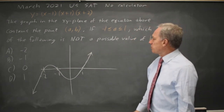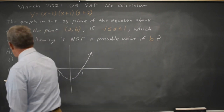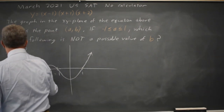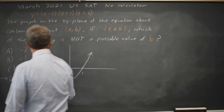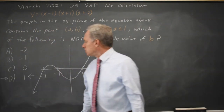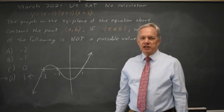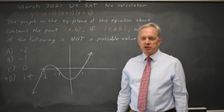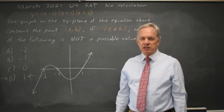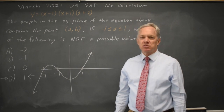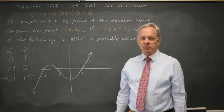Which is choice D. The y-value for an x between negative 1 and positive 1 cannot be a positive number — positive 1.